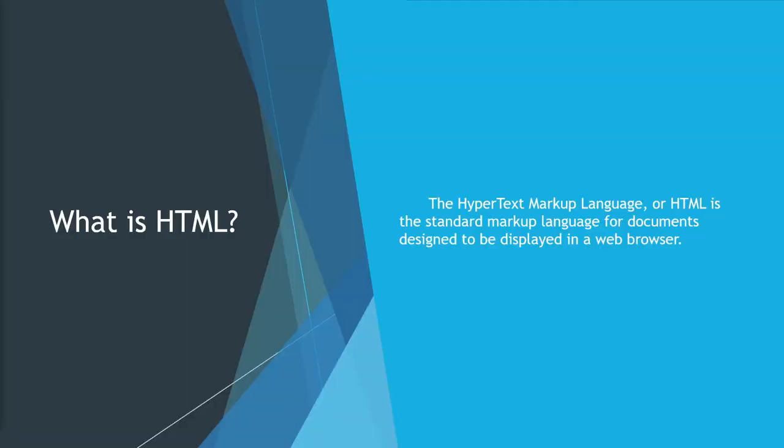So before we start talking about the history of HTML, what exactly is HTML? HTML is short for Hypertext Markup Language. It is the standard markup language that we use to write web documents. So when you open, say for example, Google — it's written with HTML. Netflix — HTML. Your personal blog — HTML.